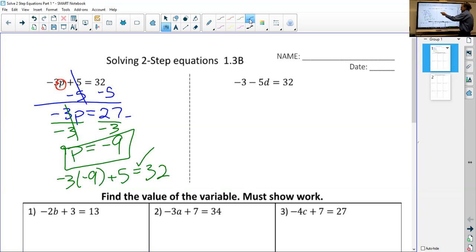Let's try one more. So negative three minus five D equals 32. We want to get the variable by itself. So we want to get rid of this minus three first.